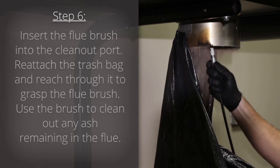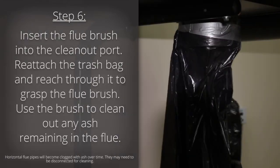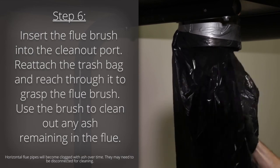Step six, insert the flue brush into the clean out port. Reattach the trash bag to the drip leg and reach through it to grasp the flue brush. Use the brush to clean out any ash remaining in the flue.